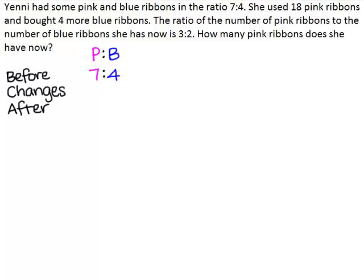She used 18 pink ribbons, so here we have minus 18. And she bought 4 more blue ribbons, so here we will have plus 4. The ratio of the number of pink ribbons to the number of blue ribbons that Yeni has now is 3 to 2.